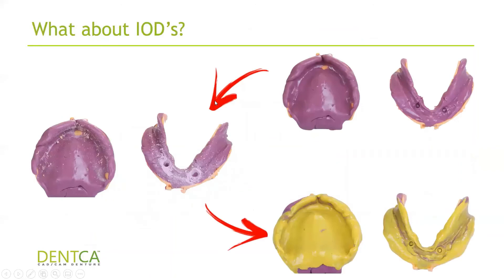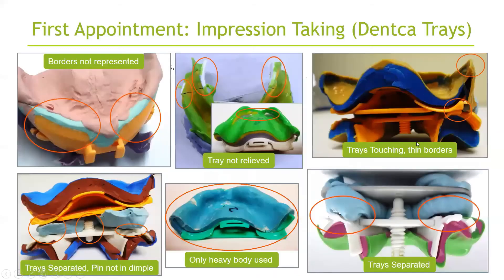If you have an implant overdenture, the process is the same. Just make sure the locator abutments are in place. The only difference is that once you're done with the heavy body, enlarge those holes where the abutments are before doing the light body wash, so you can seat it back easily without struggling to refit it and have it locked in place.